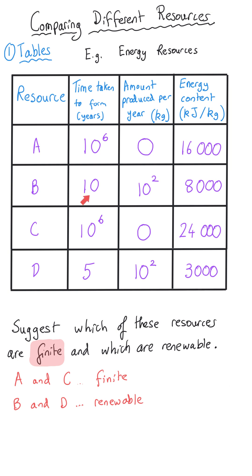And that makes sense if you compare how long it takes these resources to be produced five years and ten years for D and B. So that isn't very long and so provided we regulate the rate at which we use these resources then this can be considered to be sustainable and the resource is renewable.